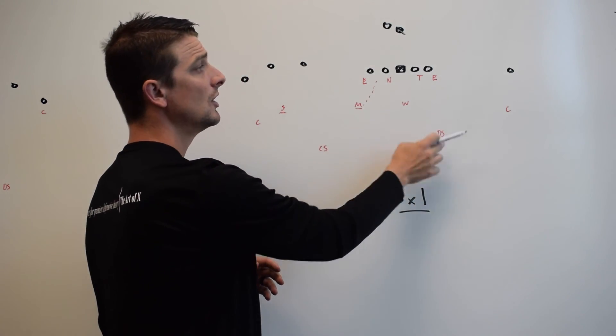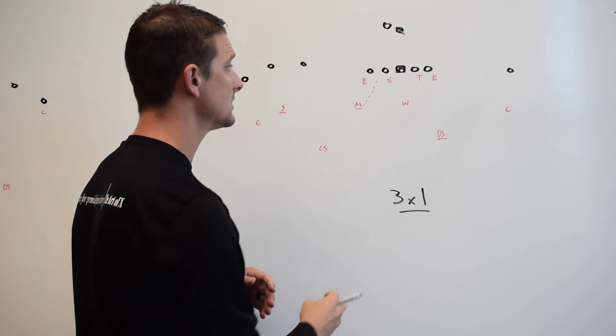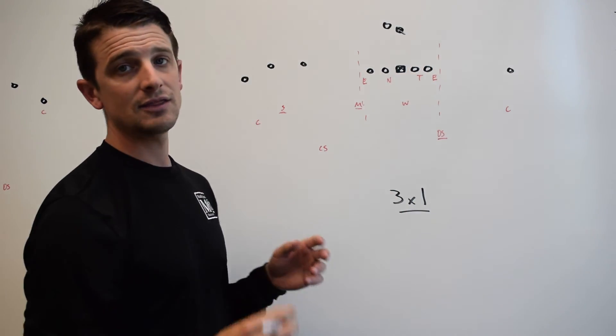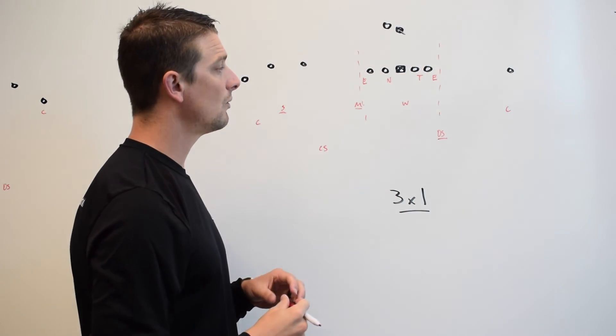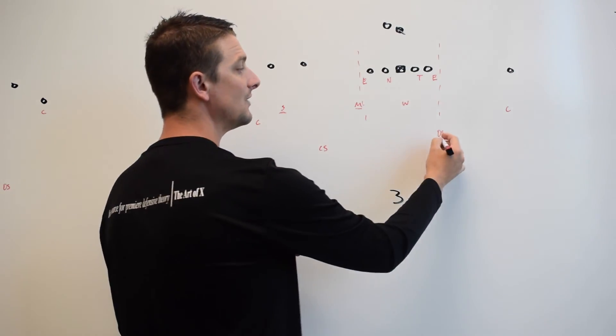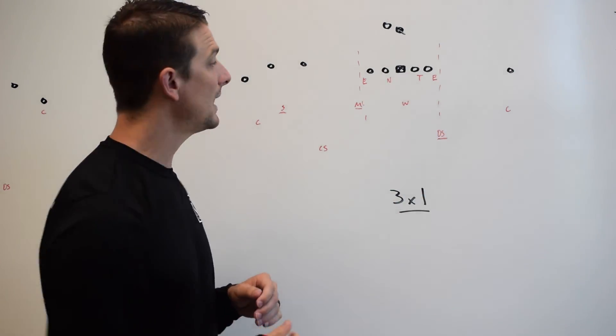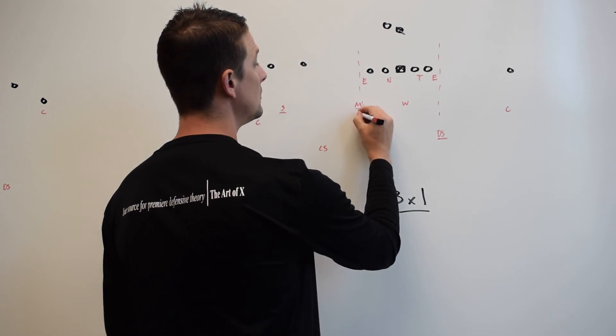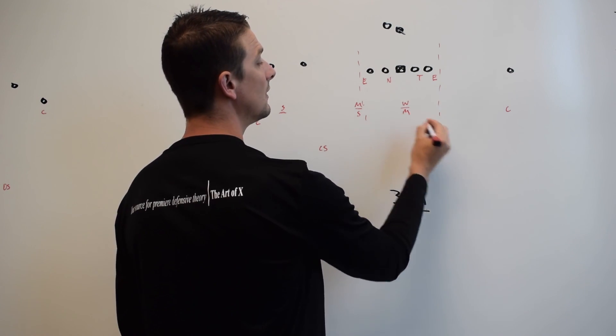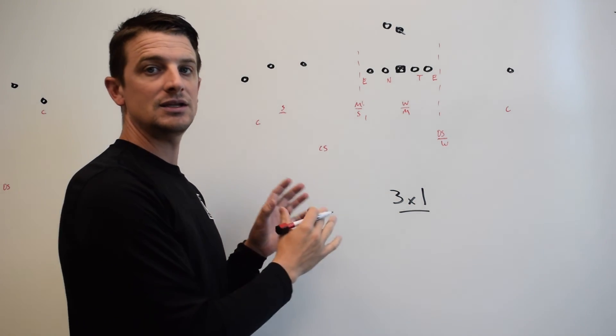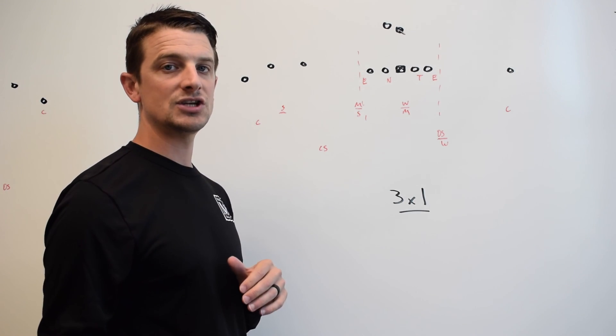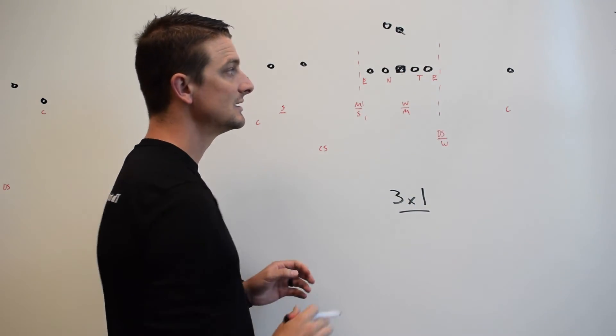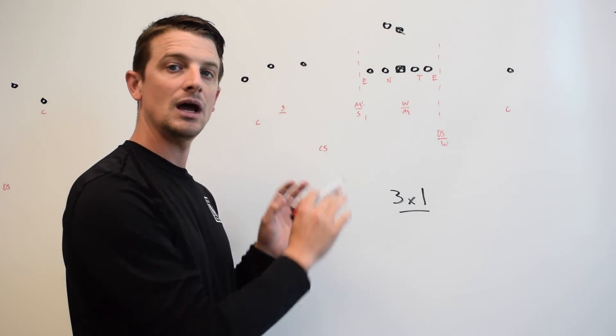So, we've talked about cover downs, overhangs, now let's talk about the box. Offensive coordinators, again, are going to define the box as this. When they see 3x1, they see a 4-1 box. What they forget is that the down safety is now your Will linebacker, the Will is now the Mike, and the Mike is actually the Sam. So, you have now changed the rules. Understanding the structure of your defense and how it changes to formations is key to understanding run fits and pass distribution. Now, I have a 4-3 alignment against 3 down.